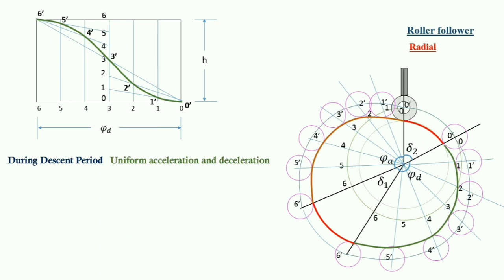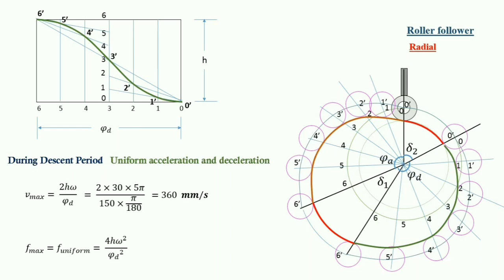Now we calculate the maximum velocity and uniform acceleration. Using the appropriate formula, we can calculate the maximum velocity during the descent period. Similarly, the maximum uniform acceleration can be calculated using its corresponding formula.